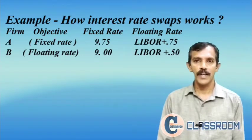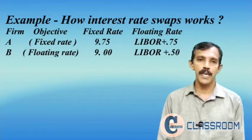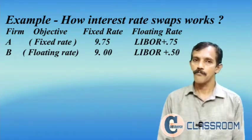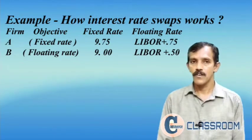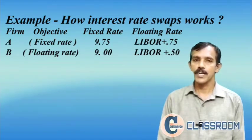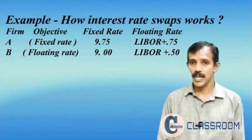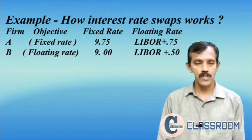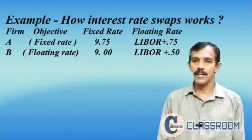In case of Firm B, if B borrows from the fixed rate market, B has to pay only 9 percent. Examining these situations, it is clear that Firm B has absolute advantage in both the fixed rate market and the floating rate market. In the fixed rate market, A has to pay 9.75 percent while B has to pay only 9 percent, so B has a 0.75 percent advantage in the fixed interest rate market.